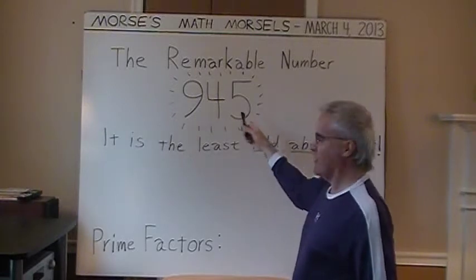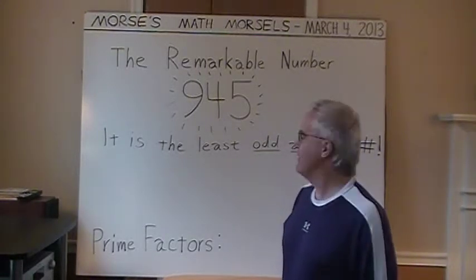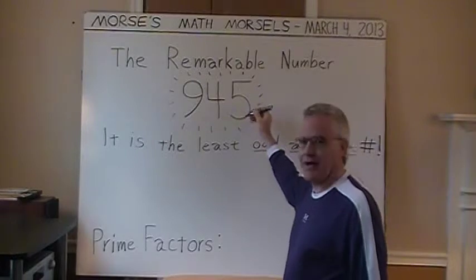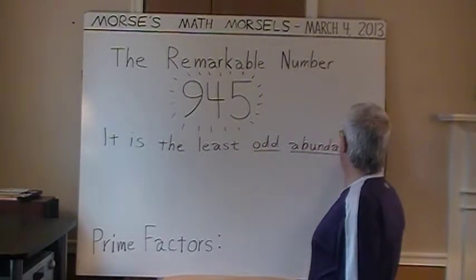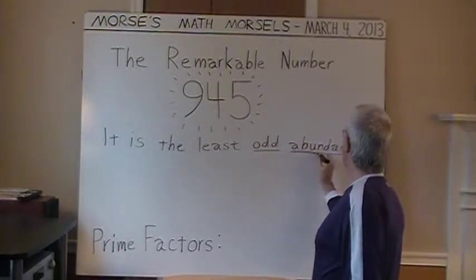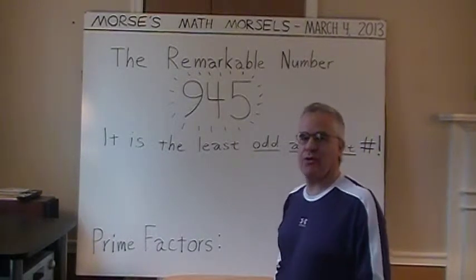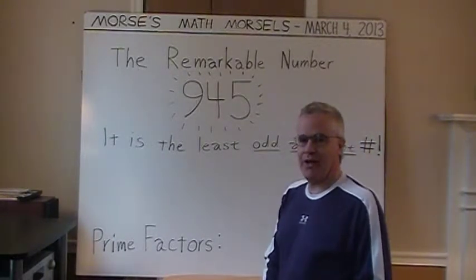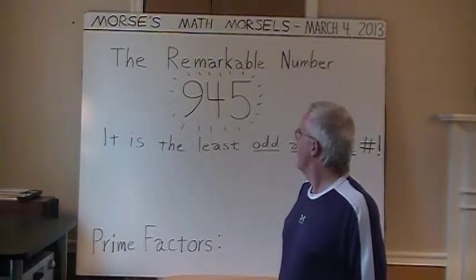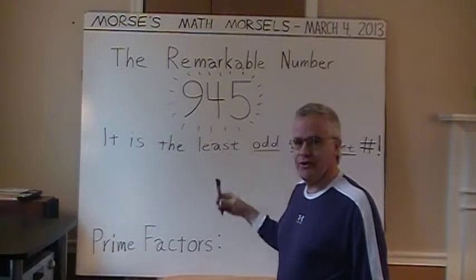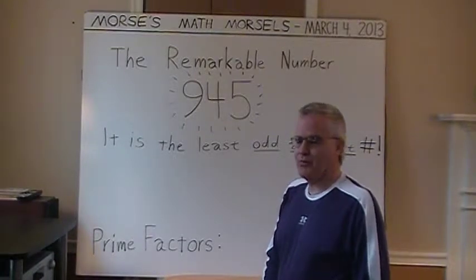Odd meaning that it's not divisible by two evenly, and it ends in the digit 5, which is an odd number. And abundant means that the sum of all so-called proper factors adds up to more than the number itself. 945 is the least such odd whole number to have that remarkable property.